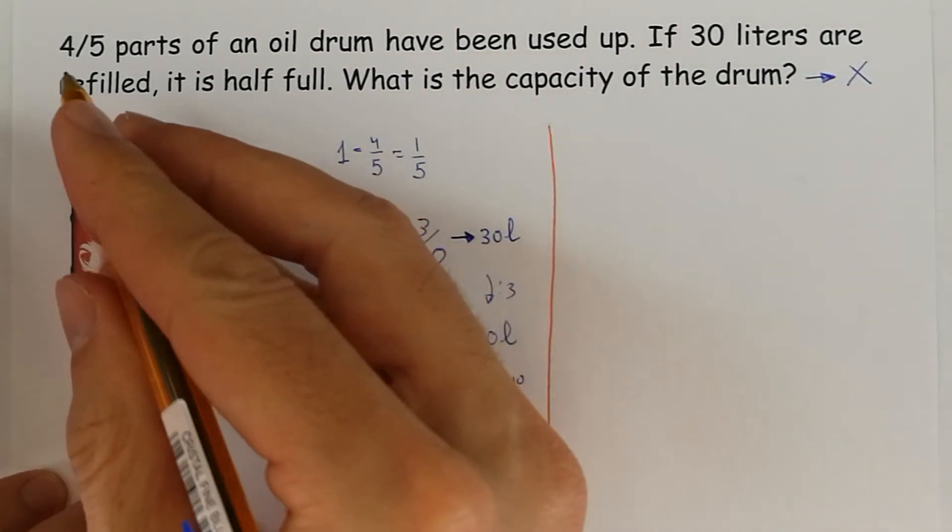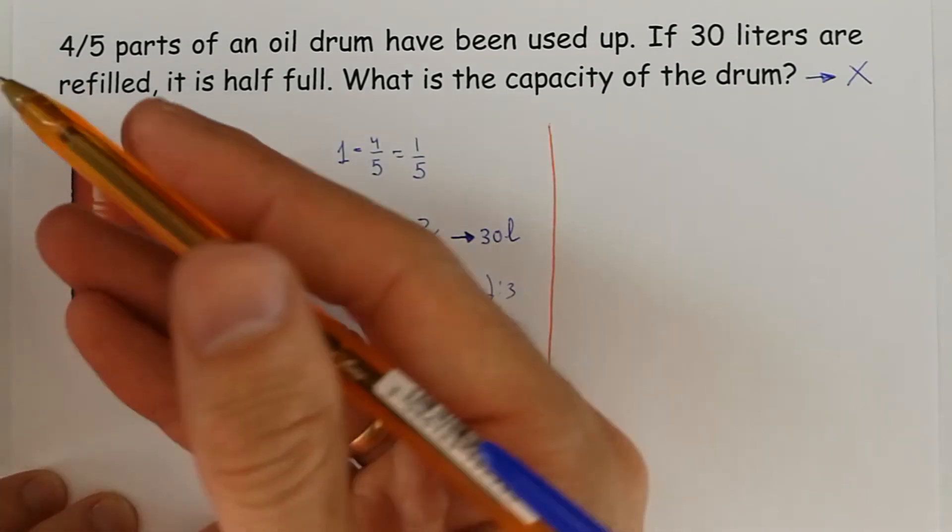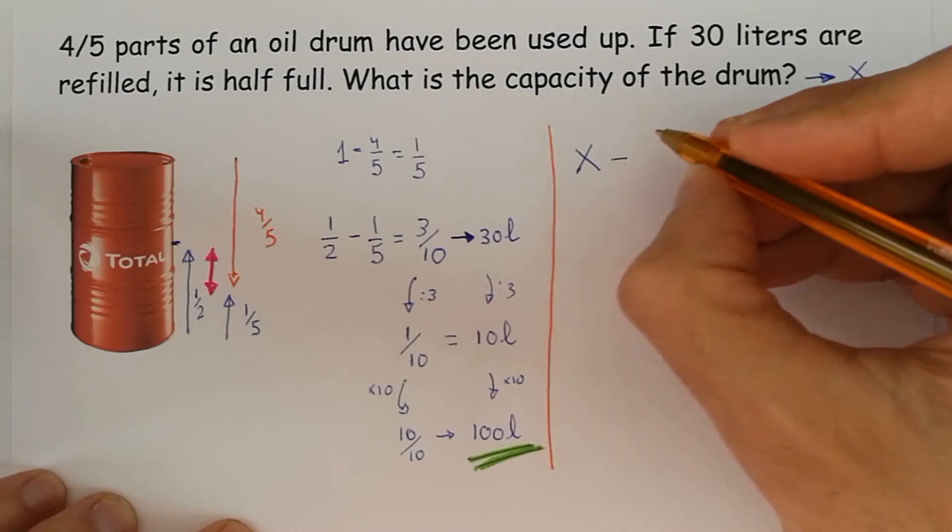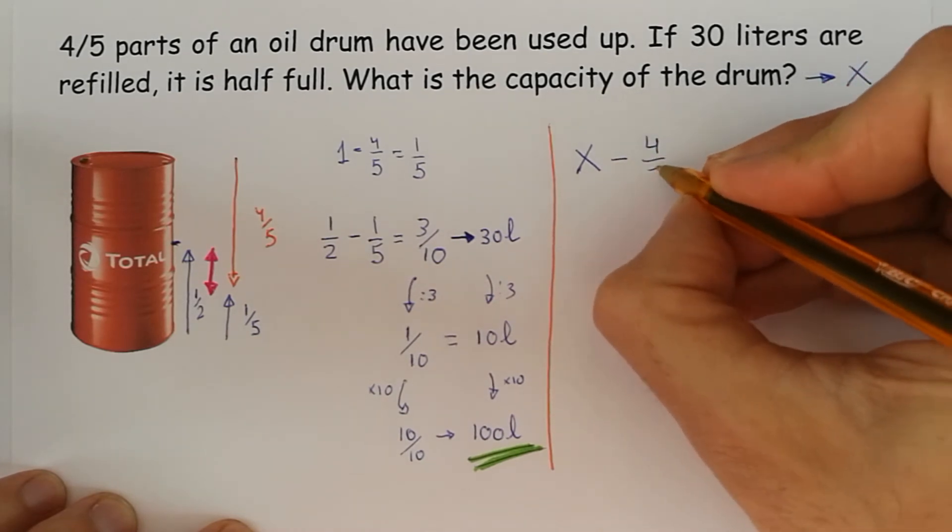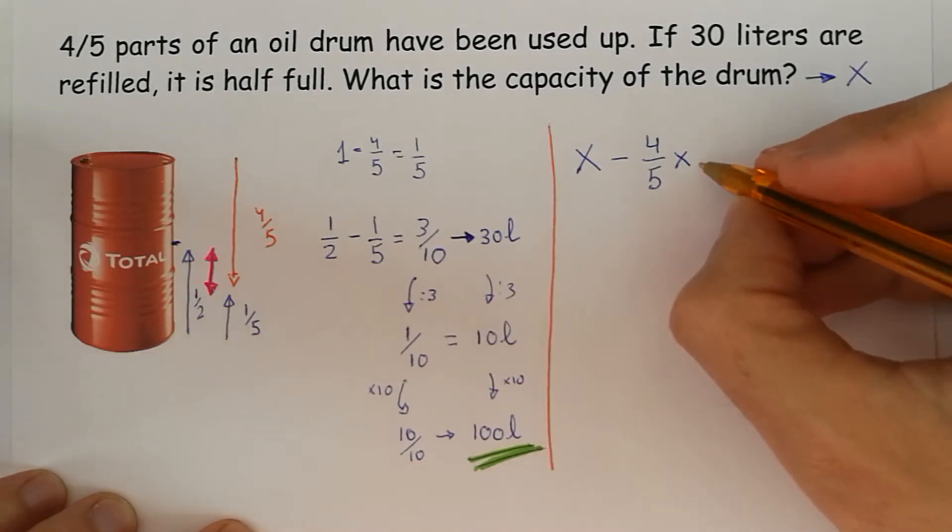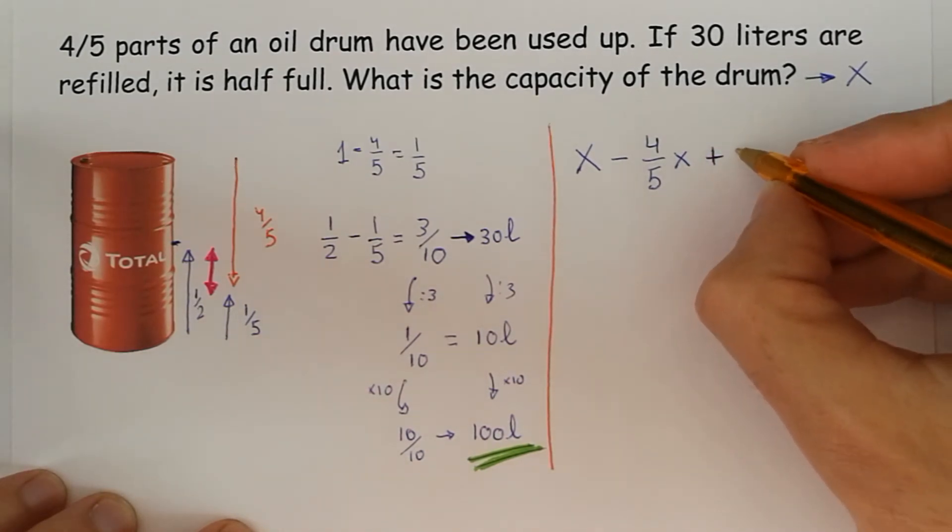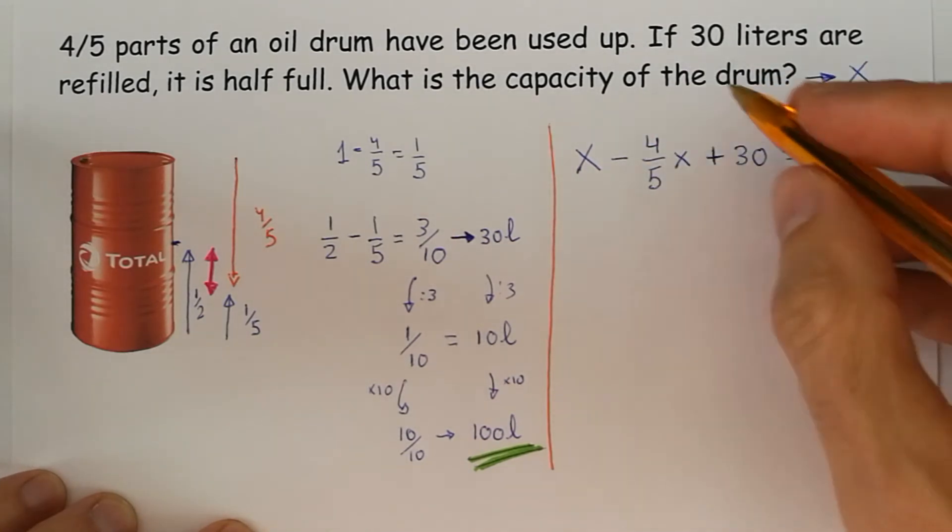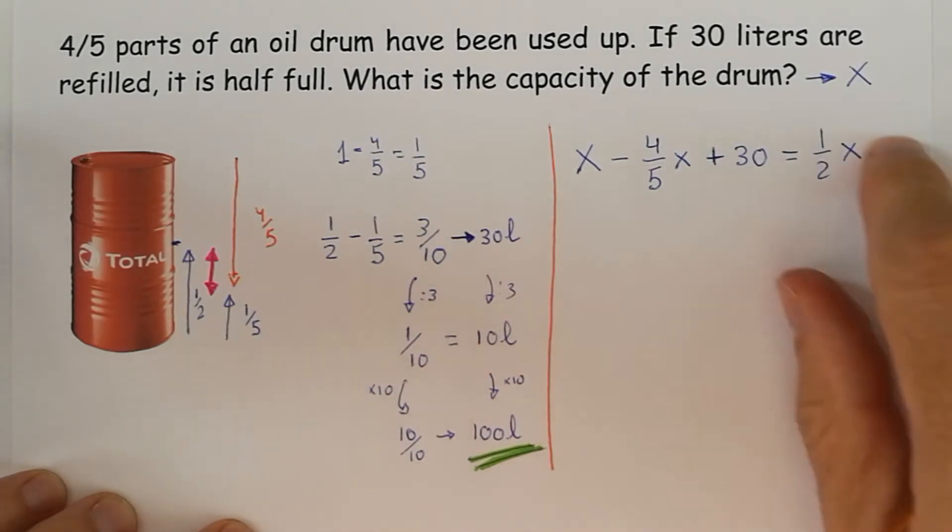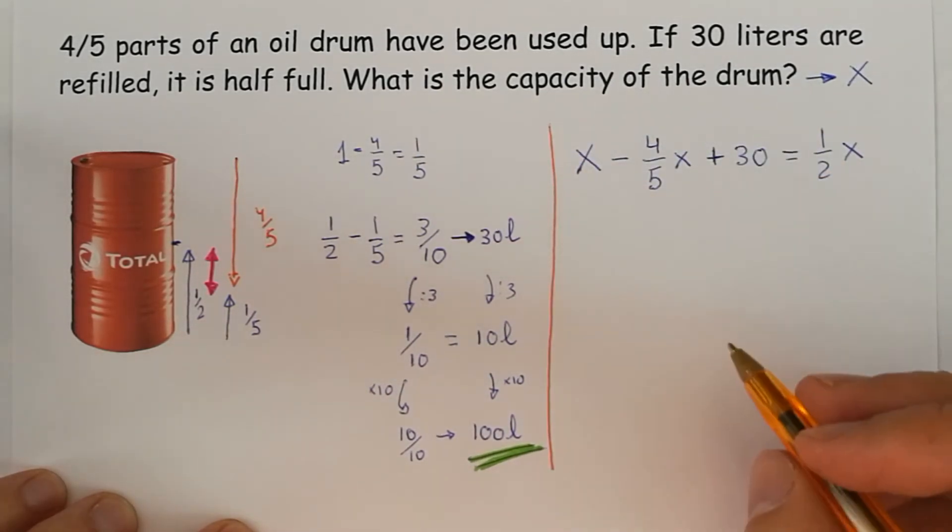And we translate, we take away from the total amount, we take away four-fifths of this drum, and then we put 30 liters on, and we get this as a result, we get one-half of the total drum. This is the situation translated into algebra.